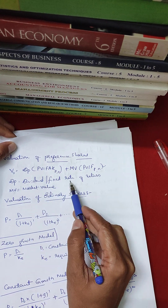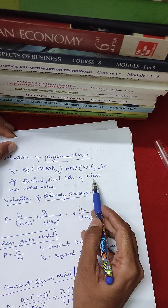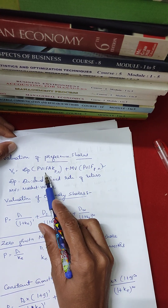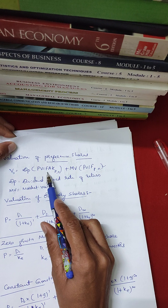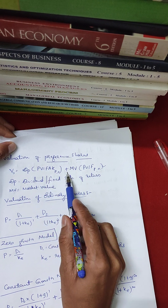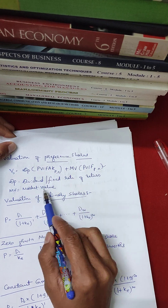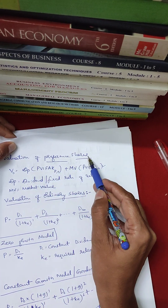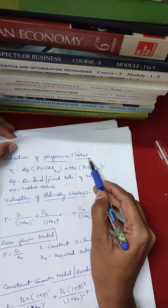Dividend is a fixed rate of return. PV times IFA gives the present value factor, plus MV — MV is the market value. This formula is for preference shares.